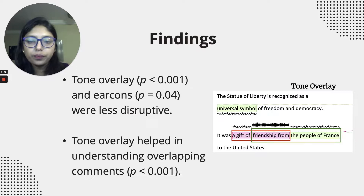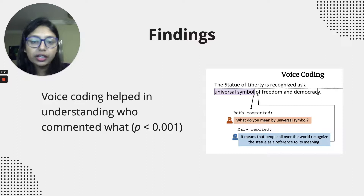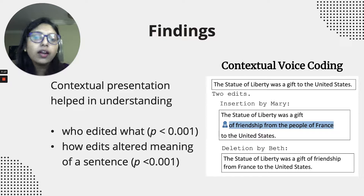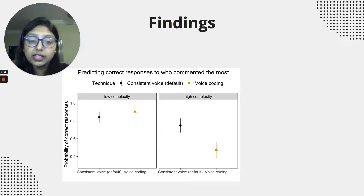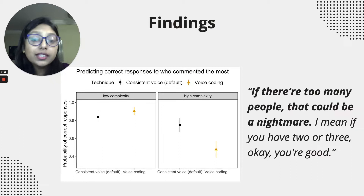Here are a few key findings from the experiment. We found that tone overlay and earcons were less disruptive than the default spoken announcements for understanding where comments are located. Tone overlay also made it easier to understand overlapping comments through changes in pitch. Voice coding made it easier to understand who commented what. Similarly, contextual presentation helped in understanding who edited what and how the meaning of a sentence evolved after edits. However, we also found that in high-complexity passages with more co-authors, voice coding became much more difficult — a higher number of distinct voices made it hard to keep track of which voice belonged to whom, and our qualitative data supported this finding.